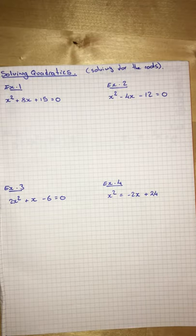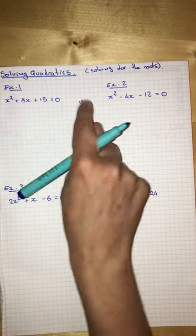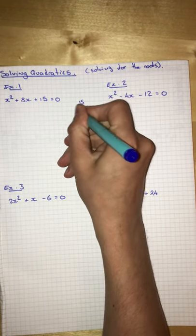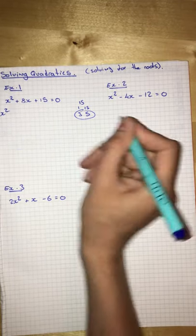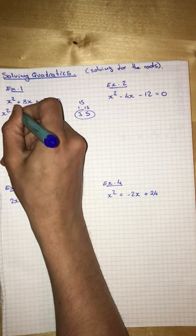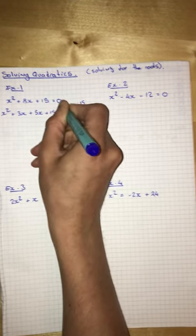So, we factorize like we did before. First times last. 15, so 1 and 15, 3 and 5. So, it's got to be that one. So, we're going to have x squared plus 3x plus 5x plus 15 equals 0.